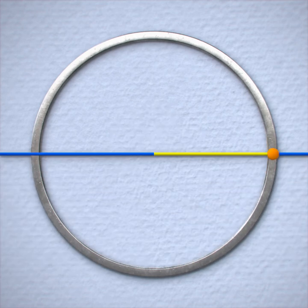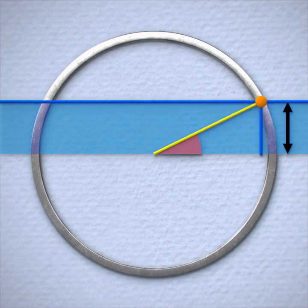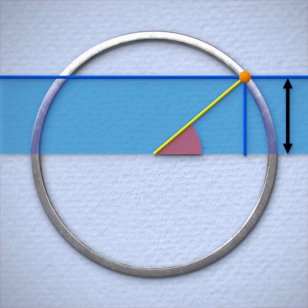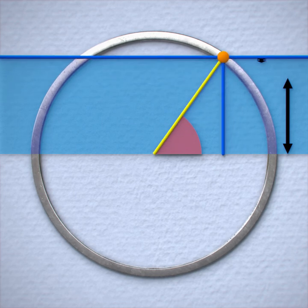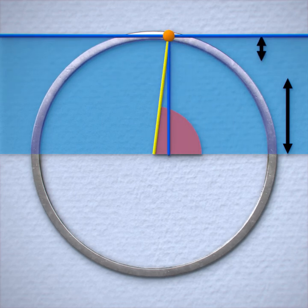As the circle rotates up from zero degrees, the height is growing quickly. And as it nears 90 degrees, the height is growing slower and slower.